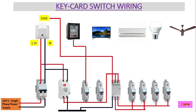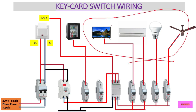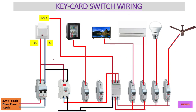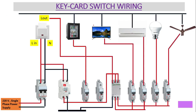From the output of each SP MCB, we can feed power to individual devices like AC, TV, fan, and lights. All these loads are operated through the key card switch, except for the refrigeration item. For the neutral wiring of the loads, neutral connects from the neutral busbar to every load. Up to here we have completed the wiring.